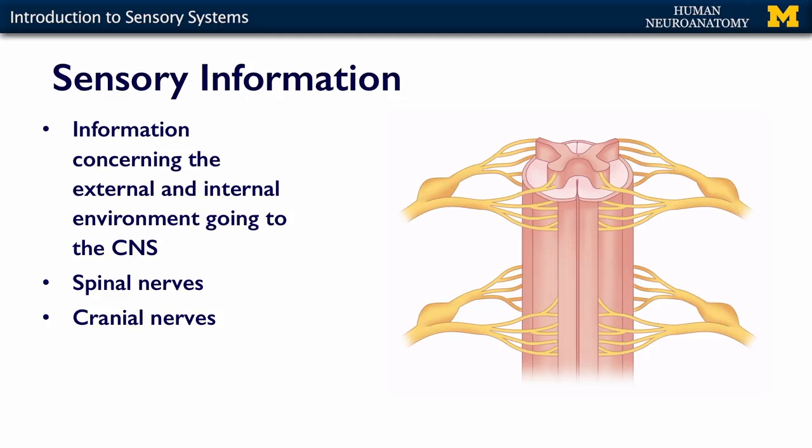Sensory information concerns your external environment — the sound of my voice, the look of these slides, the birds you can hear singing out the window, the feel of the chair underneath you. You also have sensory information from your internal environment: when you're hungry, if you have an ache or a pain, or if something's going wrong with your digestive system, you will have a sensation about that. We're going to talk about the differences between these systems, some commonalities, and how they all get to the central nervous system.